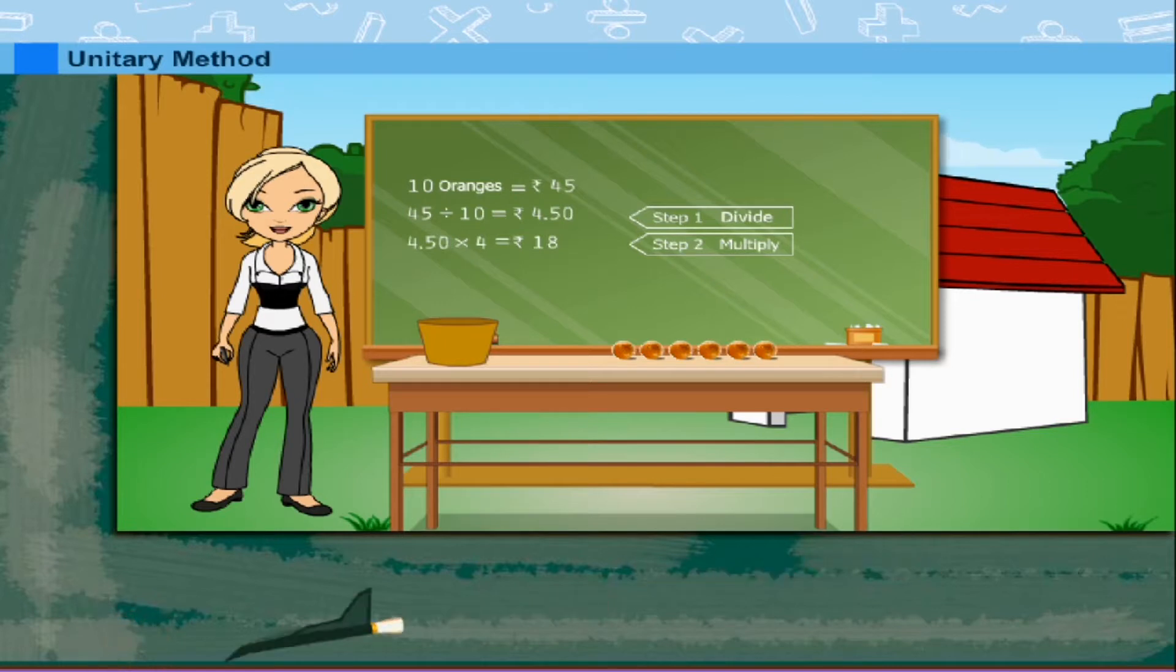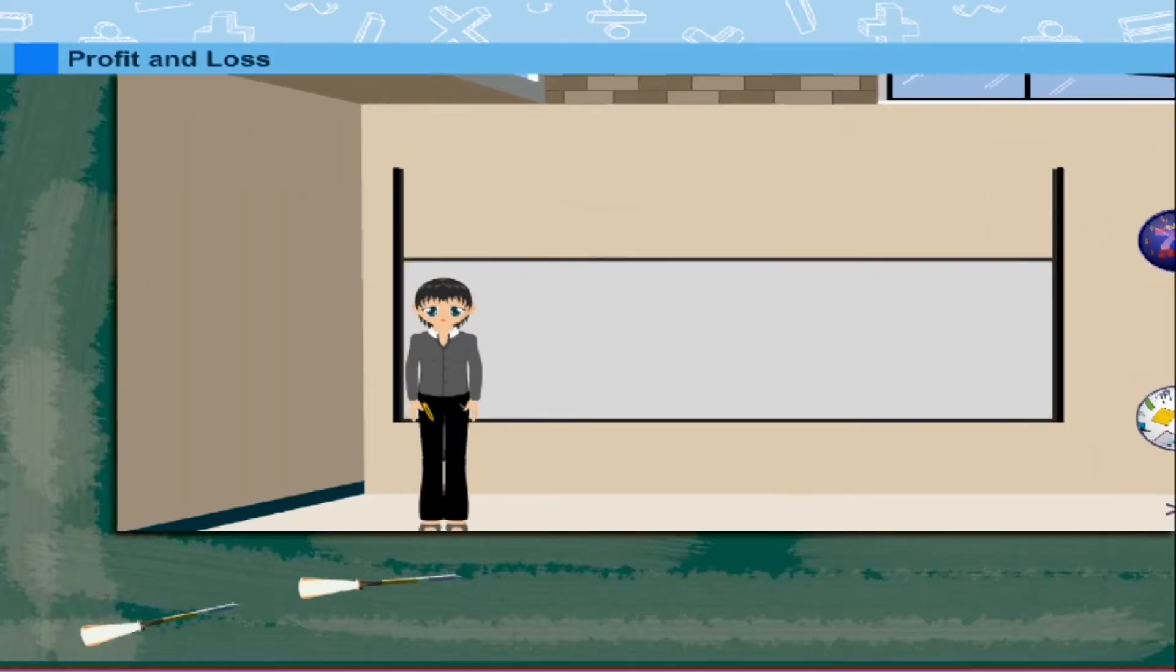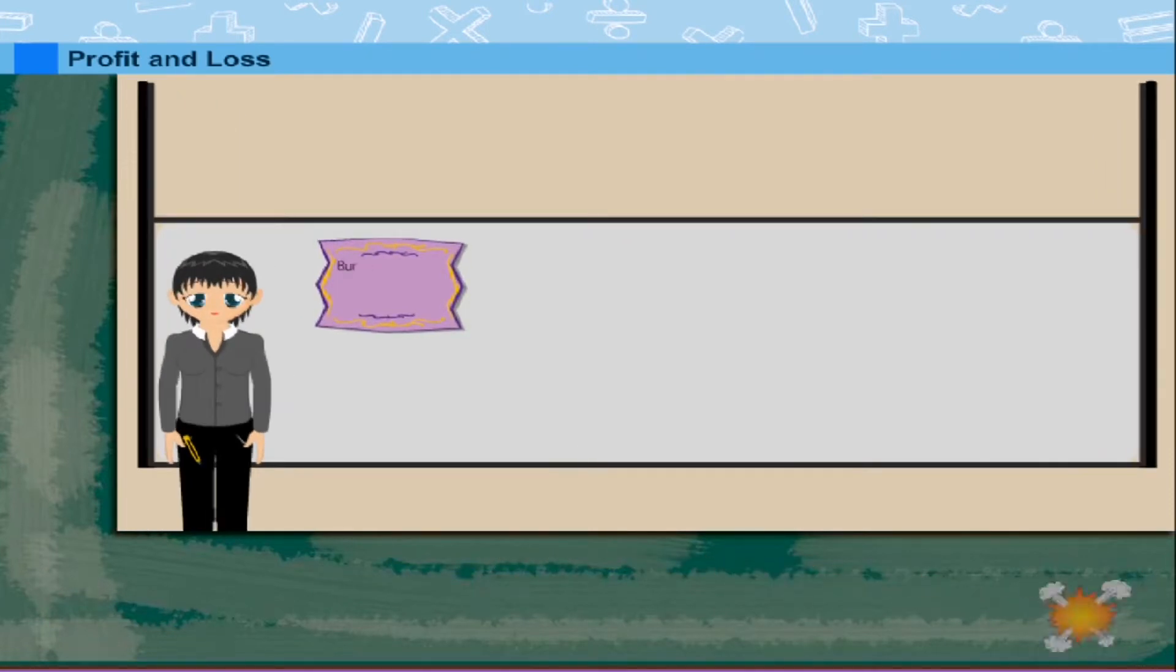That was simple ma'am. Profit and loss. Teacher Nancy is ready to explain profit and loss. She has put up the price of 3 items on the board.